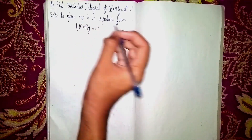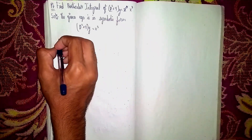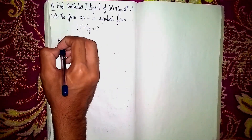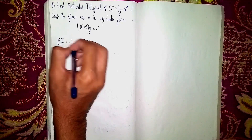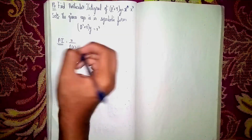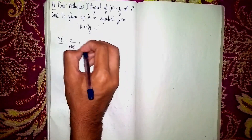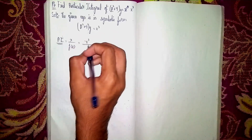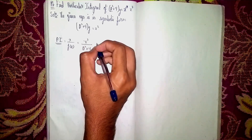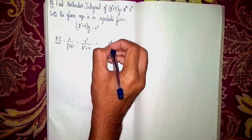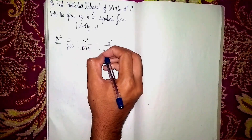Now what we will do is find the particular integral. The particular integral shortcut is PI = x / f(D), where x is x³ and f(D) is D² + 4. So PI = x³ / (D² + 4). What I will do is take 4 outside and divide by 4 here.